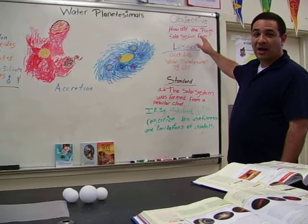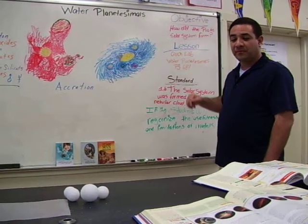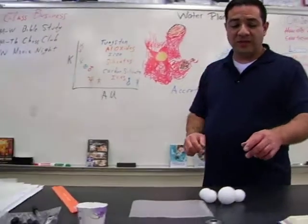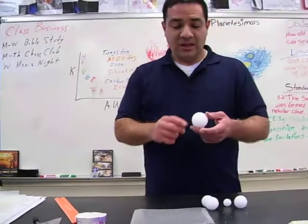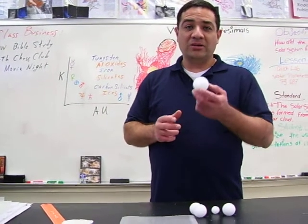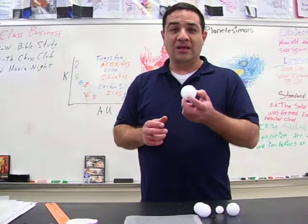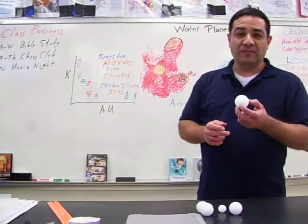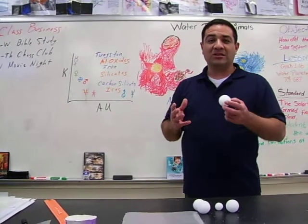The objective question: how did the proto-solar system form? To understand this, we need to understand that the sun, our sun, is a third generation star. So the second generation star, the one that was here before our sun, blew up in a nova explosion, leaving behind a cloud of gas and dust called a nebula.